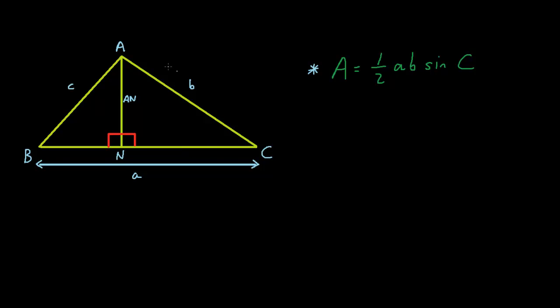I'll be proving why this formula works using the diagram to my left. The triangle to my left has four vertices: A, B, C, and N. The line AC has the length B, the line BC has the length A, and the line AB has the length C, and the line AN has the length AN.